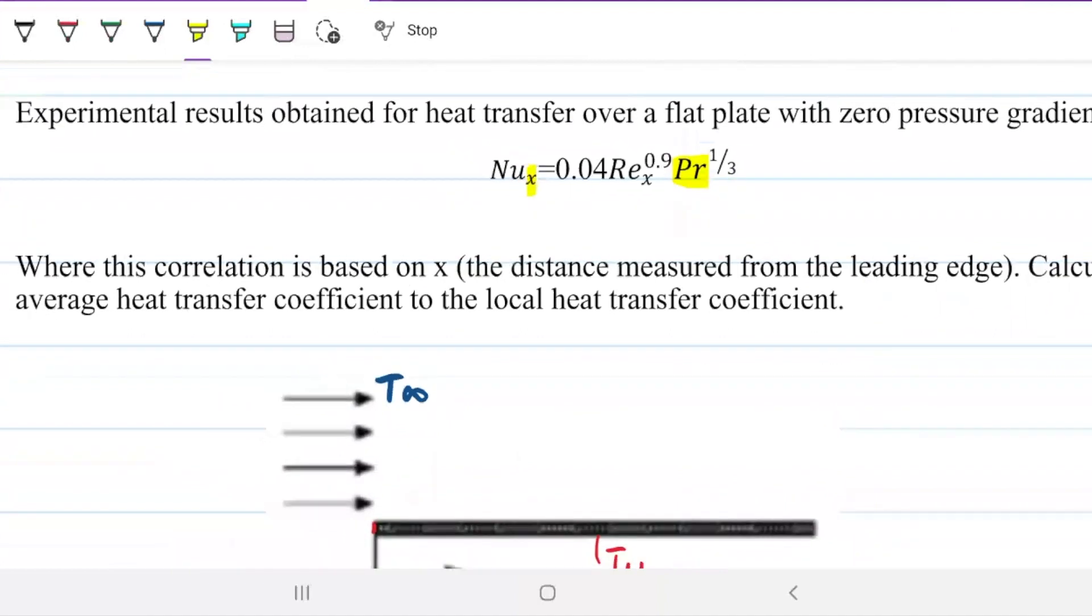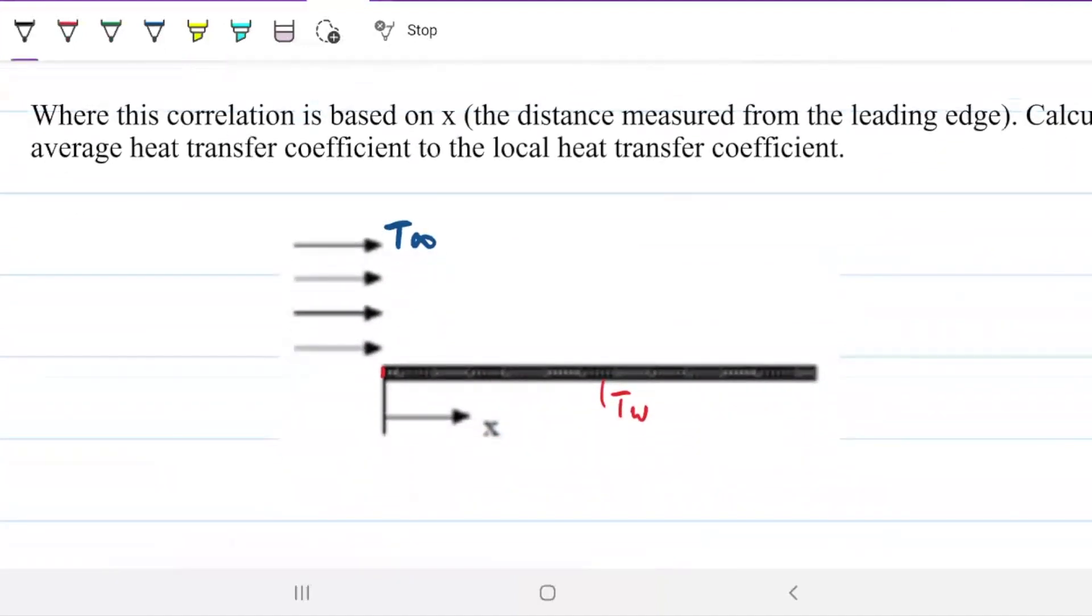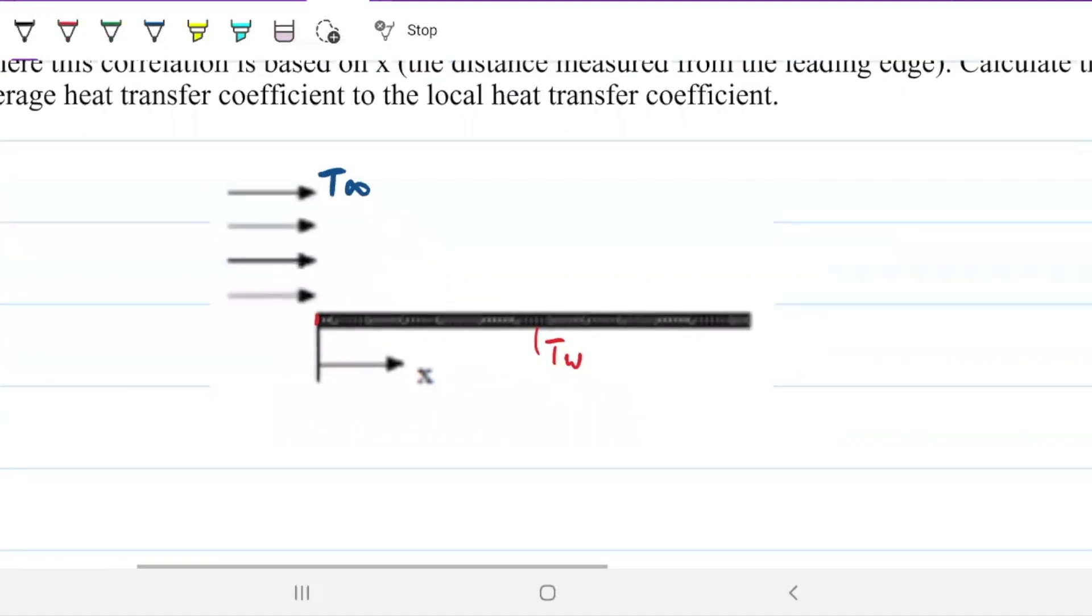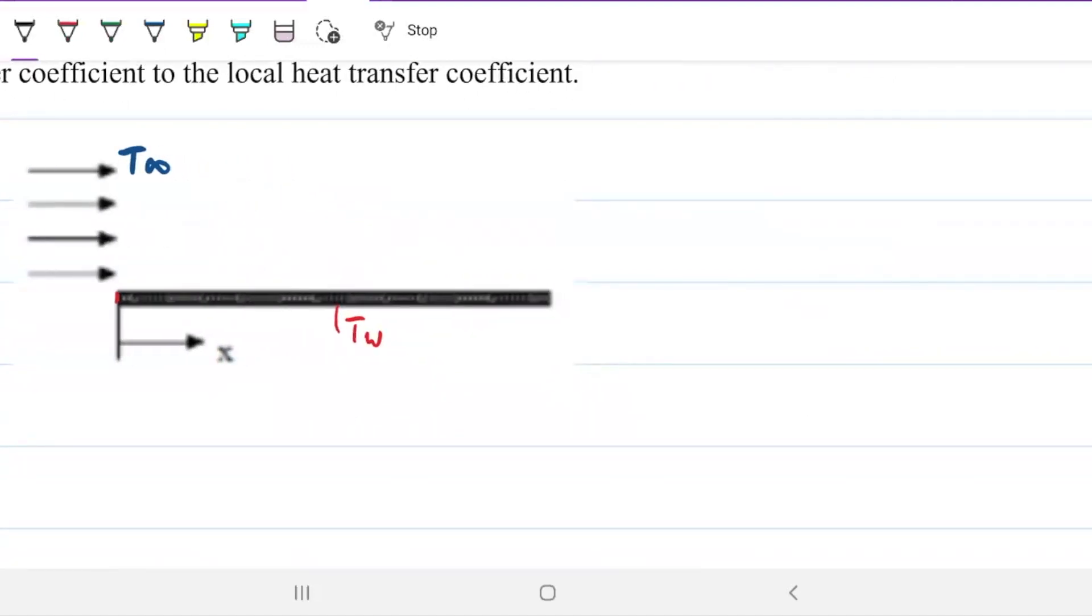So what we need to do here is to find an equation to relate the ratio between the average heat transfer coefficient and the local heat transfer coefficient. So what are we looking for? We're looking for this ratio here.